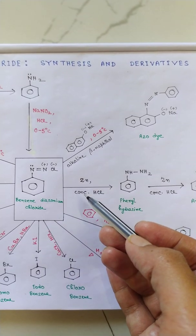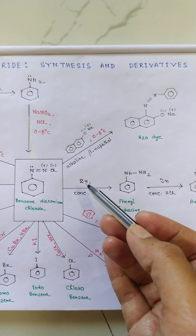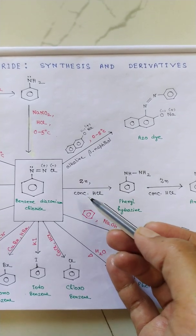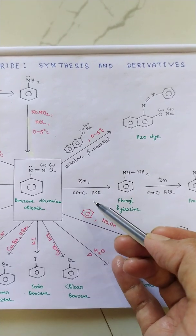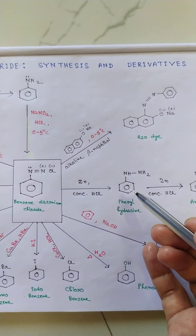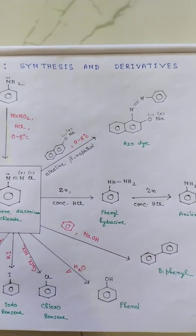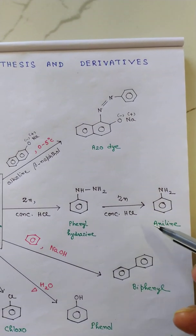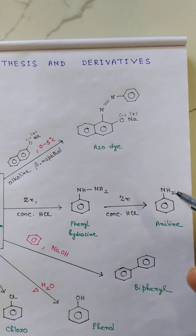We apply Zn and concentrated HCl. Zinc provides electrons, concentrated HCl provides H plus. So collectively they give H, which reduces this benzene diazonium chloride, firstly to phenylhydrazine, and upon further reduction the compound gets reduced to aniline.